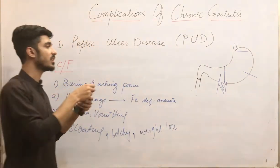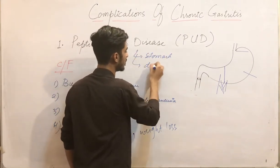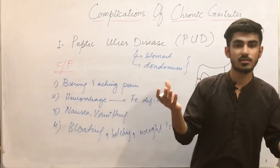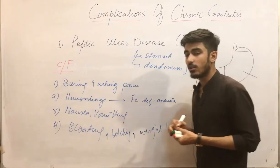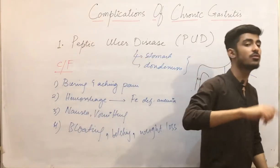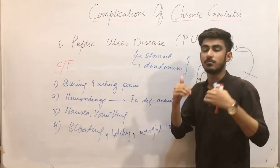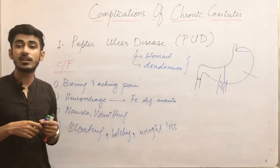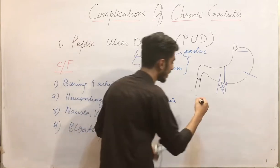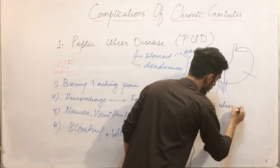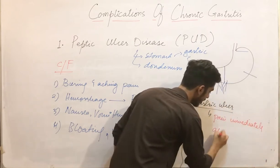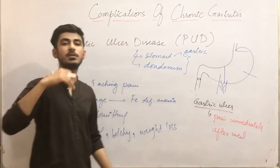Peptic ulcer disease can occur in the stomach or in the first part of the duodenum. How can you differentiate between gastric and duodenal ulcers? When a patient presents with peptic ulcer disease, ask whether they feel pain immediately after eating a meal. If yes — pain immediately after eating — that indicates a gastric ulcer.